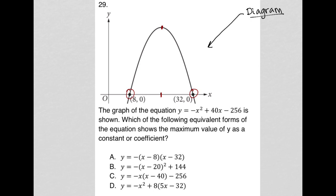So if the distance between 8 and 32 is 24, then the distance between 8 and the midpoint should be a distance of 12, which means this has to be 20, 0 right there.